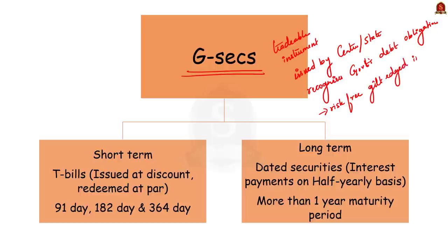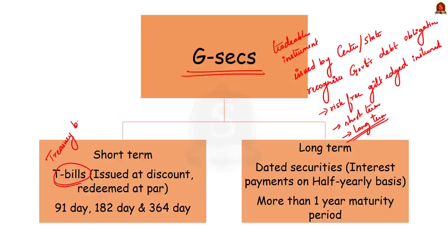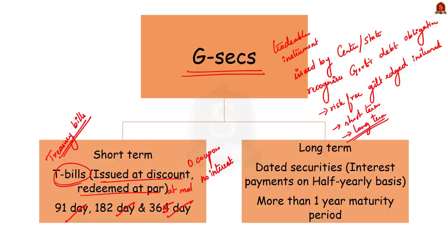Government securities are of two types: short-term and long-term. Short-term securities are also called treasury bills and they come in three tenures: 91 days, 182 days, and 365 days. The important thing about treasury bills is that they are zero-coupon securities and they pay no interest. Instead, they are issued at a discount and redeemed at face value at maturity — meaning issued at a lower value and at the end of the tenure, brought back at the full value.